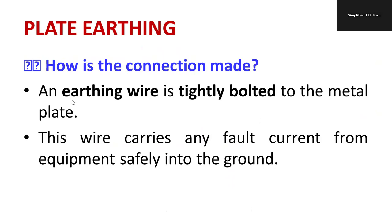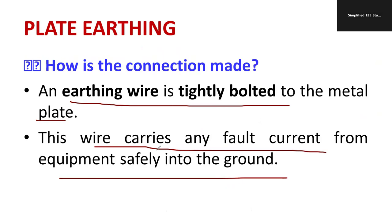How is the connection made? The earthing wire is tightly bolted to the metal plate. This wire carries fault current from the equipment safely to the ground.